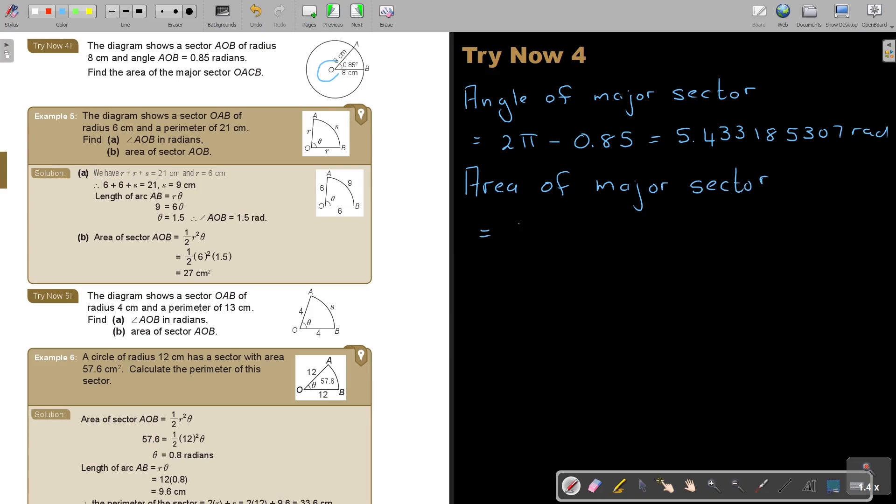And that will be the formula: half—there's the half—then R squared, then theta. And then I just substitute it in. I substitute that angle: 5.433185307. And if I press everything on the calculator and approximate to three significant figures, I get 174 centimeter squared.